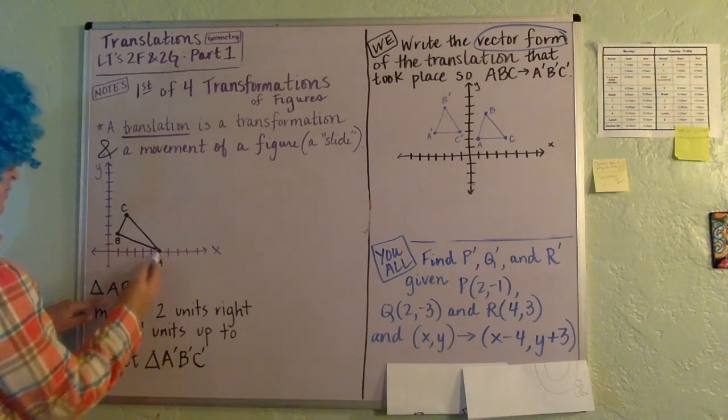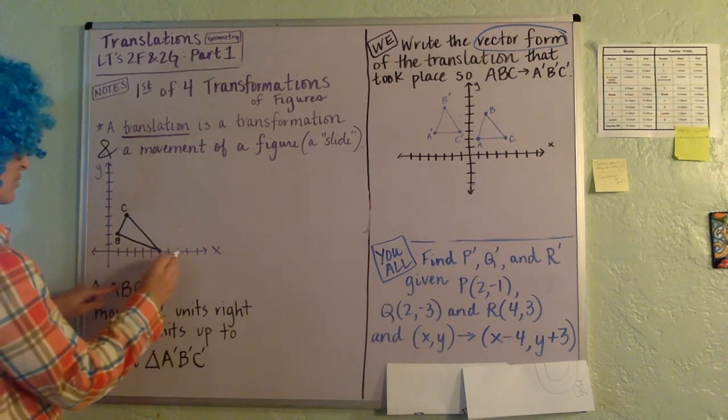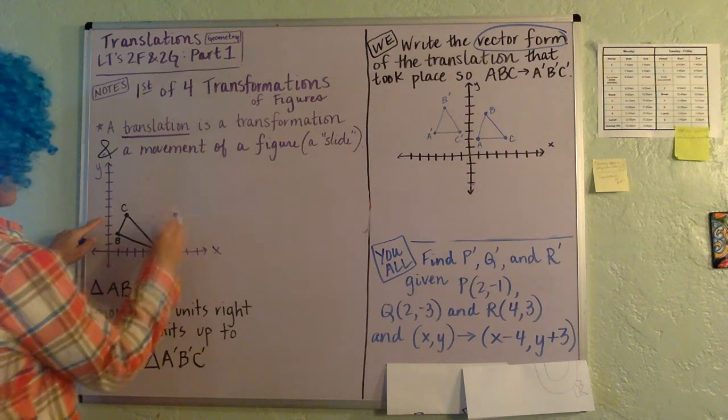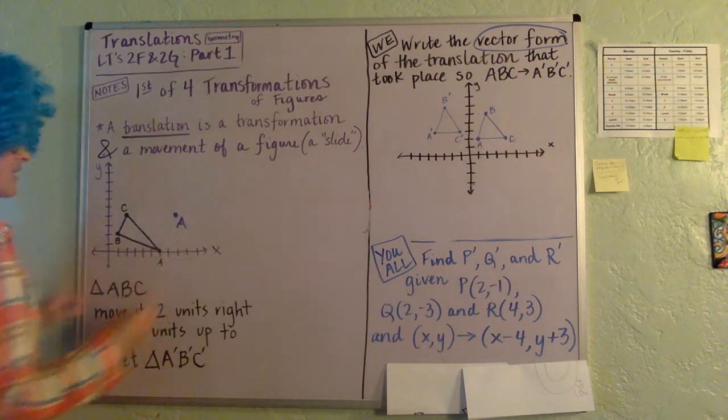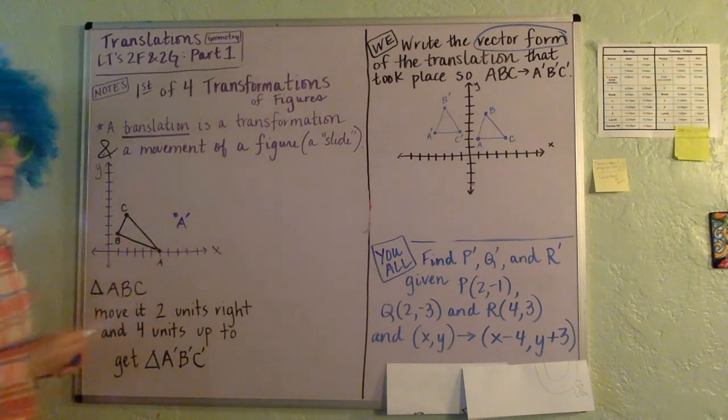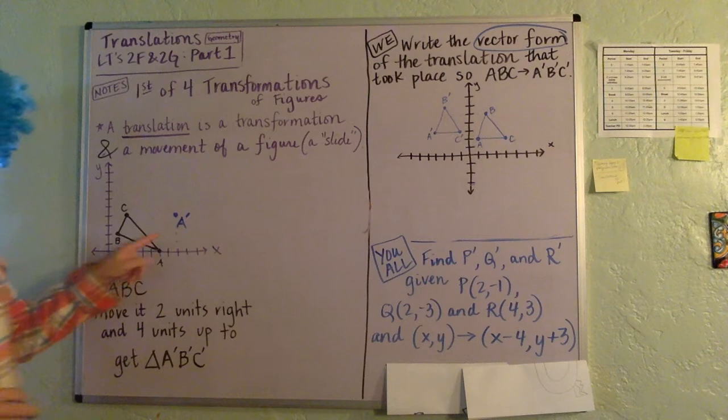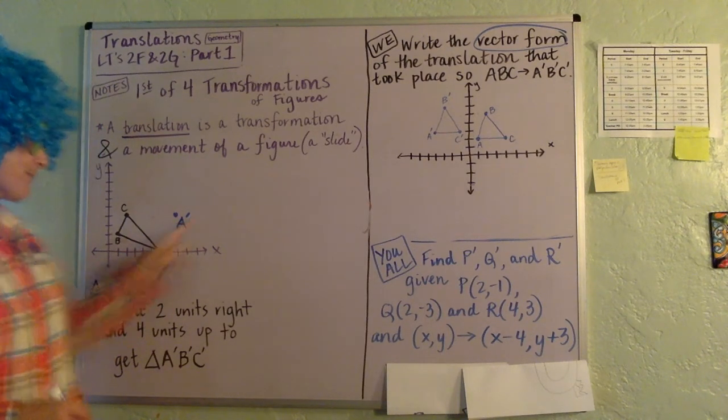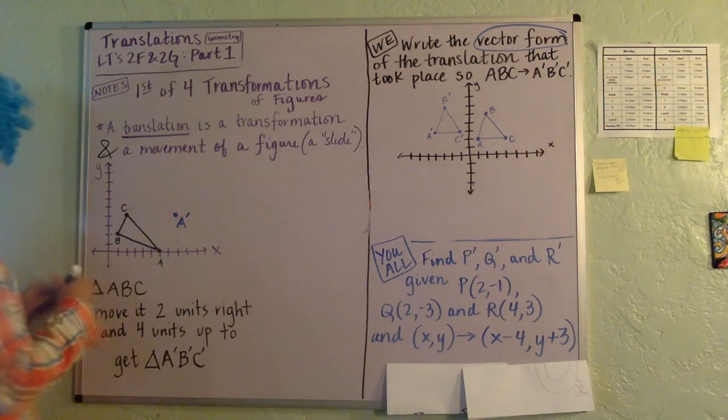So for each coordinate, let's just take each of the vertices and go two to the right and one, two, three, four up, okay? And you can see that's where A is going to move to if we slide it two over and four up. And because we know that it's a new spot, we put A with a little tick mark next to it, and we call it A prime, okay? And then for the B, let's do the same thing.